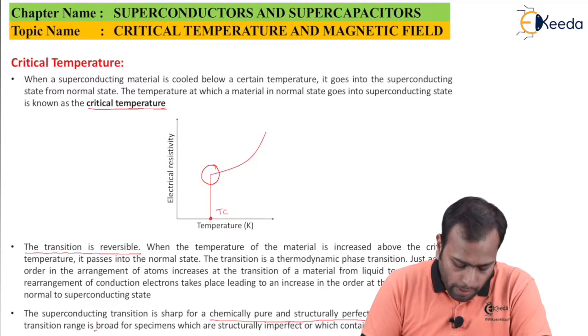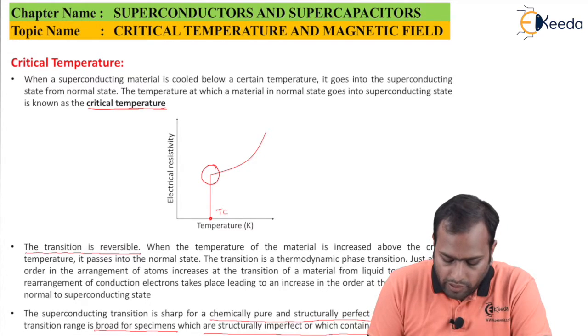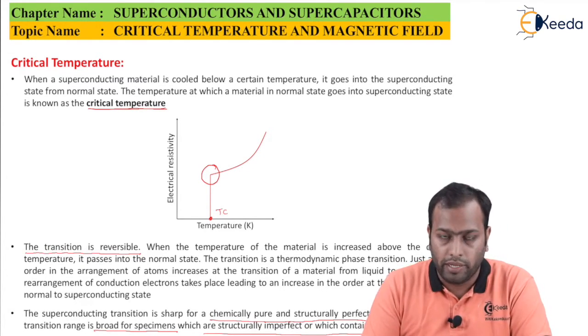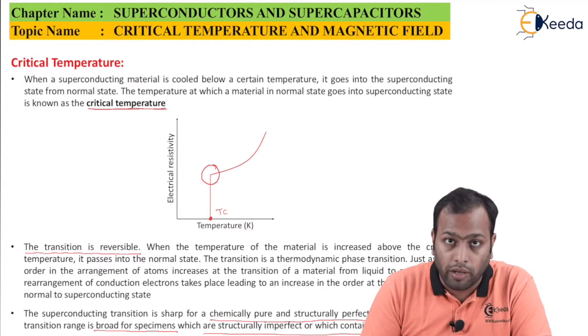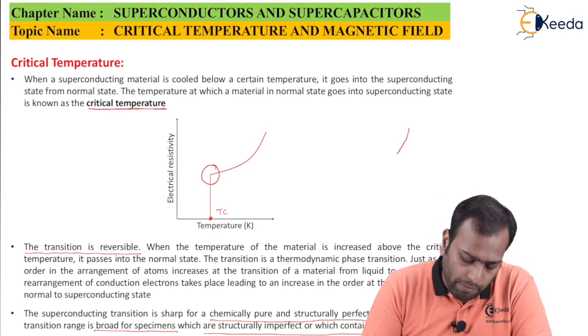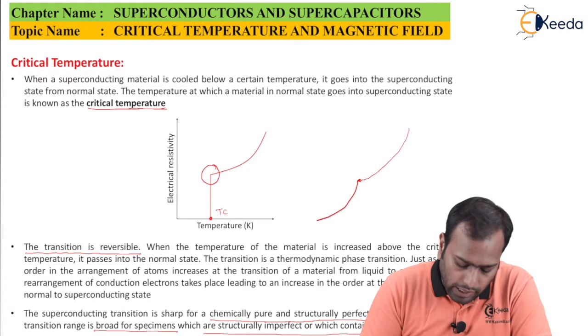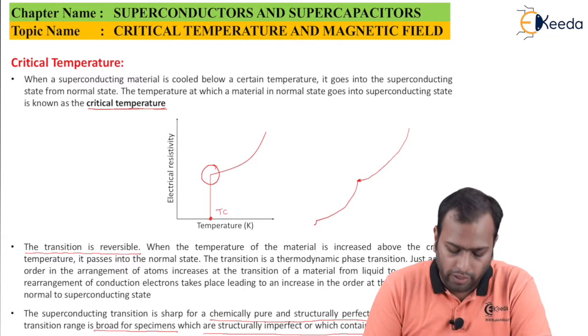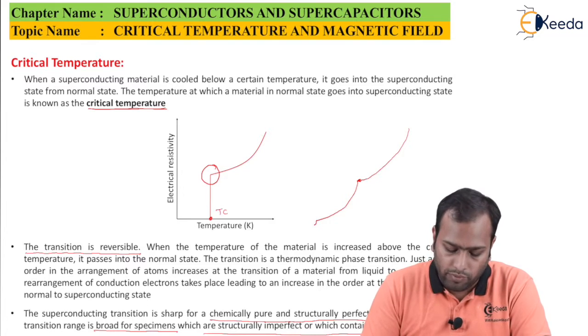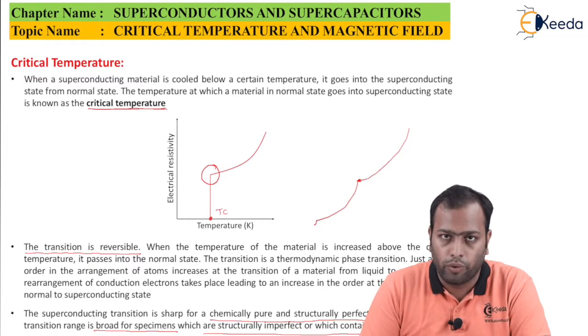Well, the transition range is broad for specimens which are structurally imperfect or with certain impurities. If you are asked to draw a graph, it would somewhat appear to be like this. Here, the phase comes and then there will be a certain steep before falling down. This is how the graph for an imperfect specimen with impurities would look like.